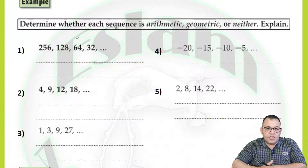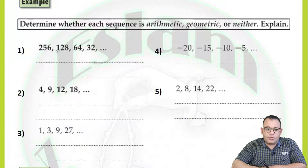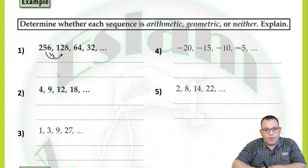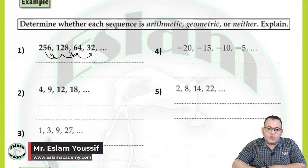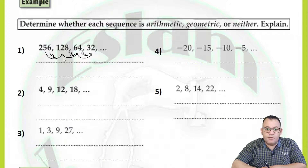To check if it's arithmetic or not, try to find the common difference. Now we need to check if it's geometric. To check if it's geometric, you need to find the common ratio. Divide 128 by 256 and you get 1 over 2. That means each time you multiply by 1 over 2. Then 64 divided by 128 equals 1 over 2, and 32 divided by 64 equals 1 over 2. We have a common ratio, so this sequence is a geometric sequence.